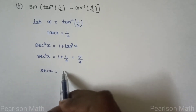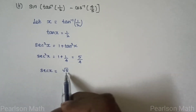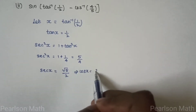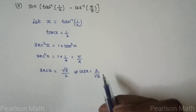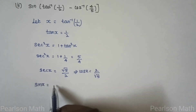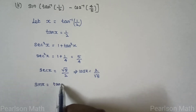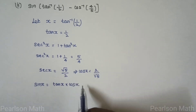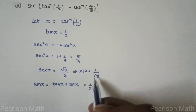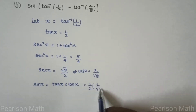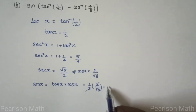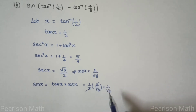Taking square root, sec x equals root 5 by 4, and the square root of 4 is 2, so sec x equals root 5 over 2. Since cos x is the reciprocal of sec x, cos x equals 2 by root 5. Now sin x equals tan x times cos x, so sin x equals 1/2 times 2 by root 5, giving sin x equals 1 by root 5.